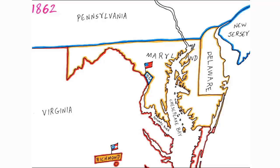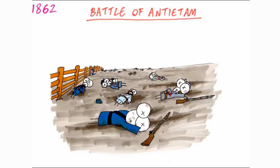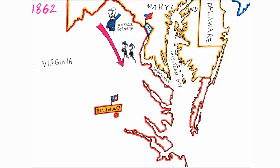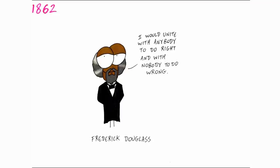Confident after their victories, Confederacy forces invaded the North, General Lee pushing into Maryland on September 5th. Two weeks later, Lee's forces met McClellan's at the Battle of Antietam, the bloodiest single day in United States history, ending in Confederacy retreat. In December, new Major General Ambrose Burnside once again pushed for Richmond, but was heavily defeated by Lee at Fredericksburg.